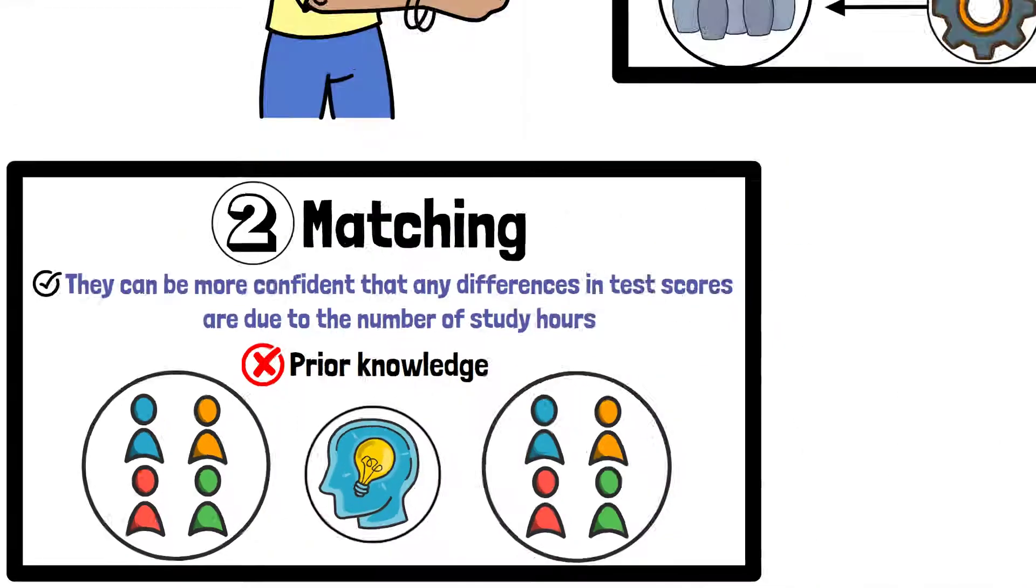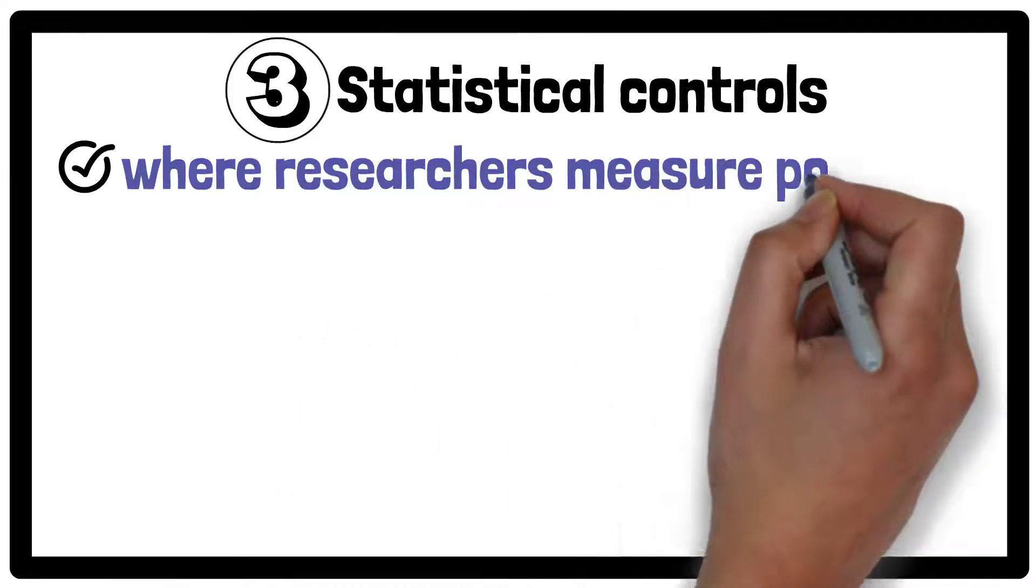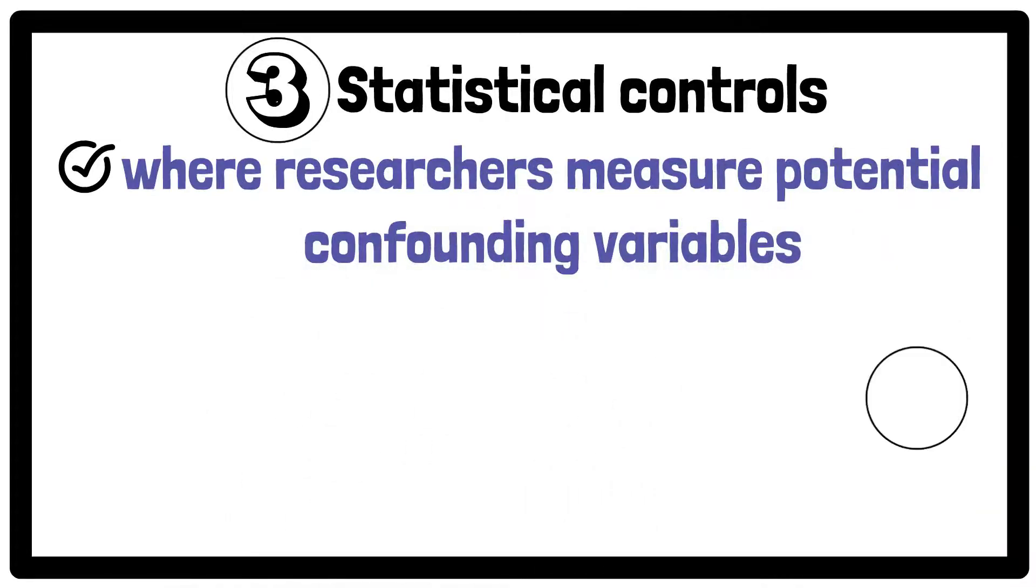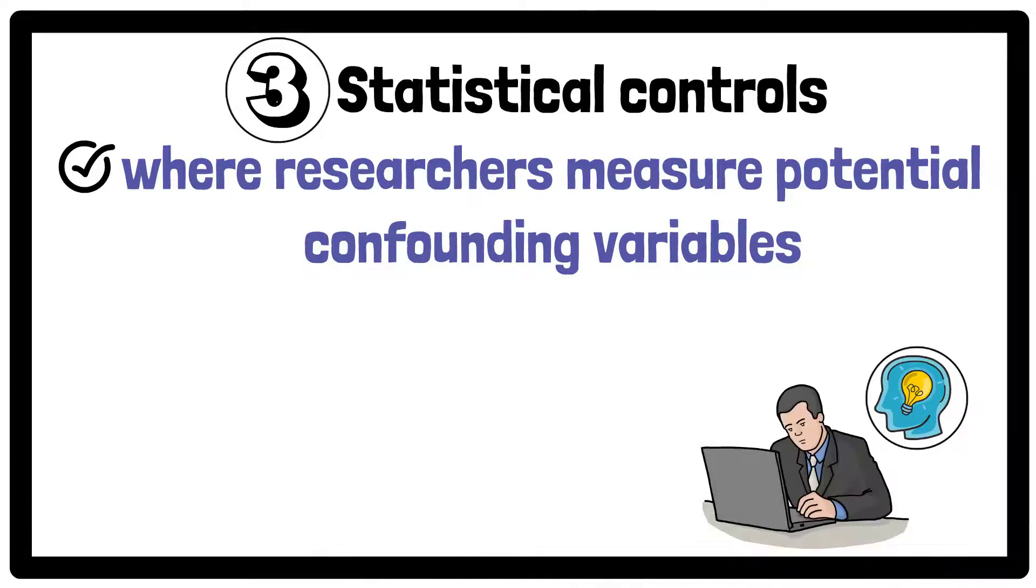A third method is using statistical controls, where researchers measure potential confounding variables like prior knowledge and include them in their analysis. By doing this they can see if prior knowledge, rather than study time, is influencing the test scores.